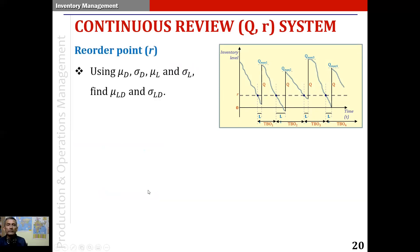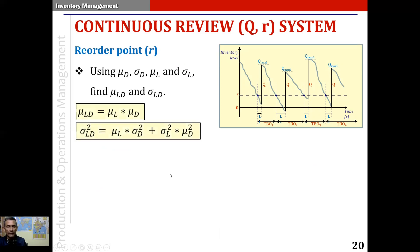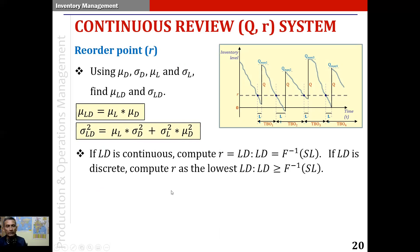We then apply the lead time demand formulae, using the mean of demand, the standard deviation of demand, mean of lead time, and standard deviation of lead time to find the mean and standard deviation of lead time demand. If lead time demand is continuous, we compute the reorder point as the lead time demand given by F-inverse of the service level. If lead time demand is discrete, the reorder point is the lowest value of lead time demand at least equal to F-inverse of the service level.